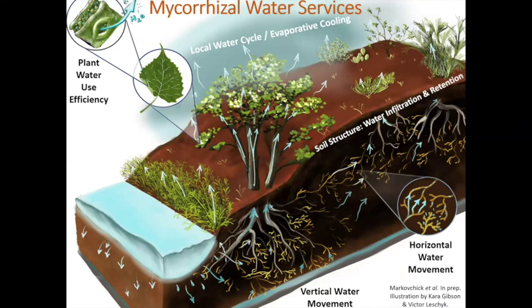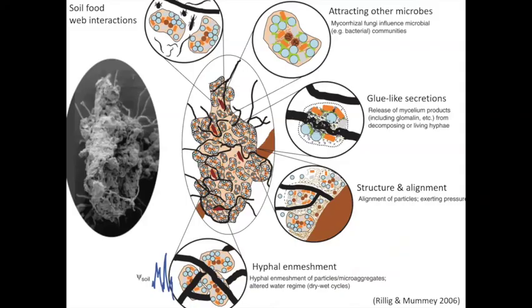There are several different ways that mycorrhizae intersect with the local water cycle and evaporative cooling cycle. I'm going to try to cover them all, focusing less on what I've done to date and more on where I think we could be going.